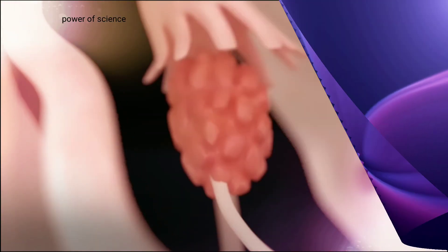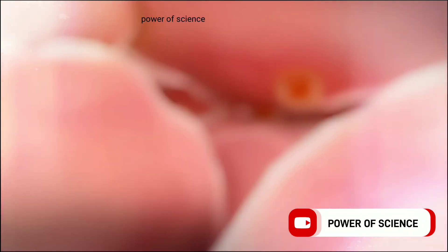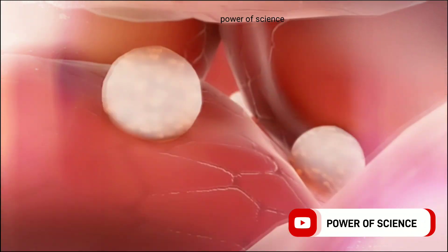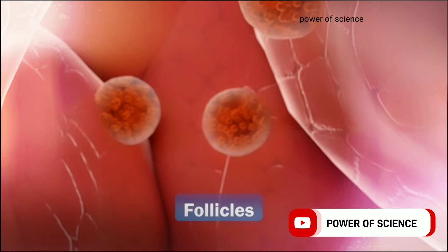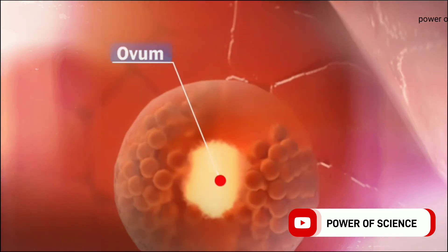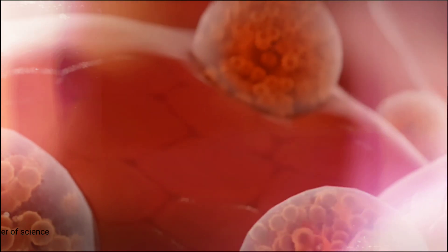Number two: Follicular phase. During this phase, hormones stimulate the follicles in the ovaries to grow. One of these follicles will develop into a mature egg. This phase lasts for 13 days from the first day of the period.